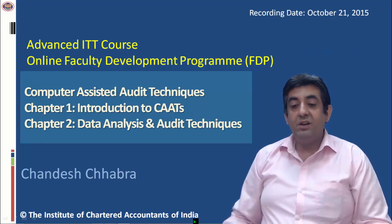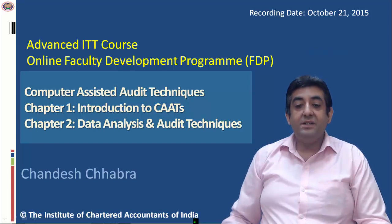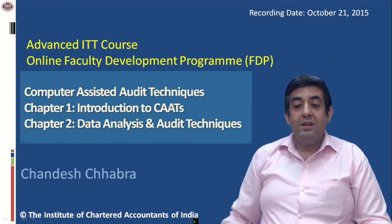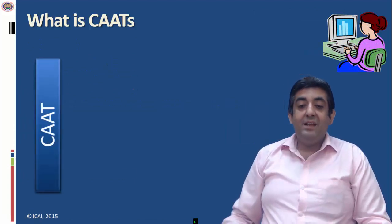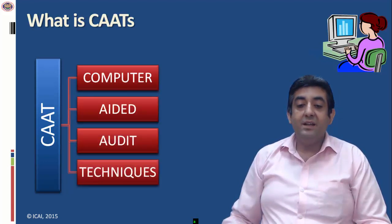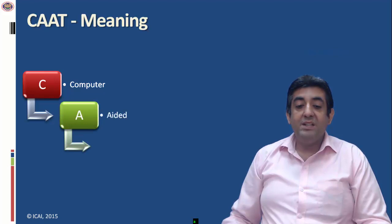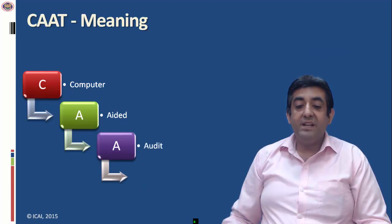Hello friends, welcome to the lecture on computer-assisted audit technique. Today I am covering chapter 1, that is introduction to CAAT. I am Chandesh Shabda mentoring this session. First of all, what exactly is CAAT? CAAT stands for computer aided audit technique. C stands for computer, meaning we are performing the process on computer; A stands for aided, with the help of computer; and T stands for technique.